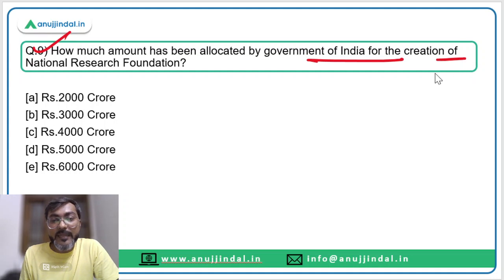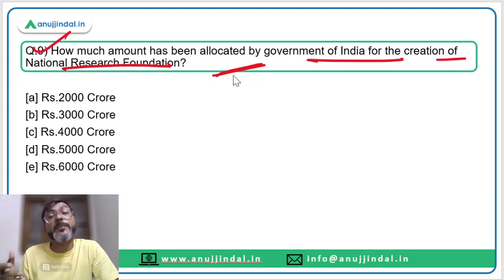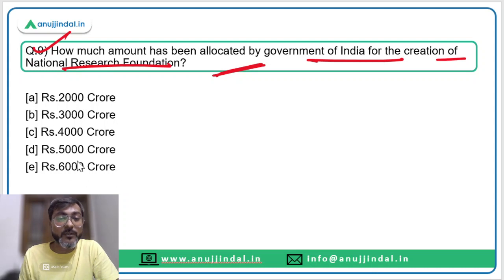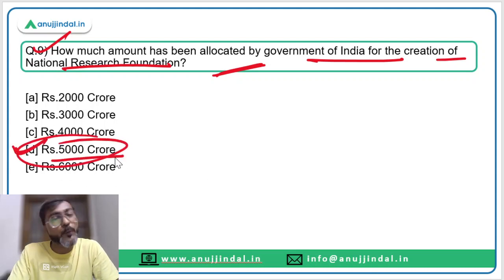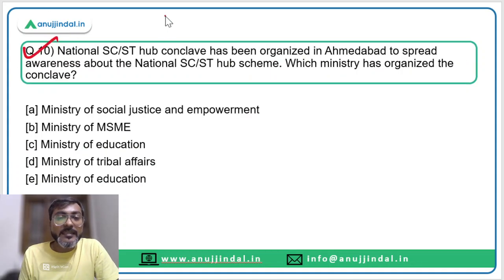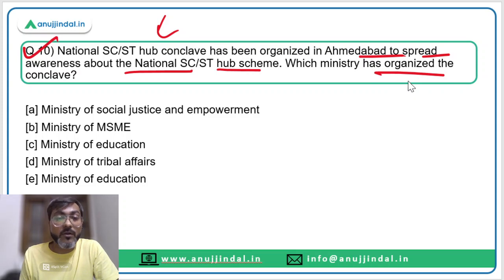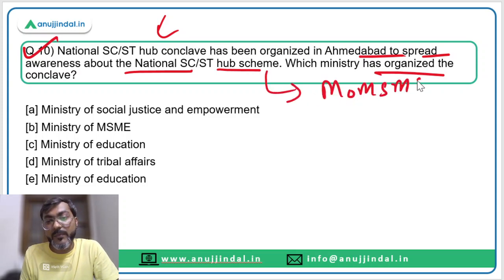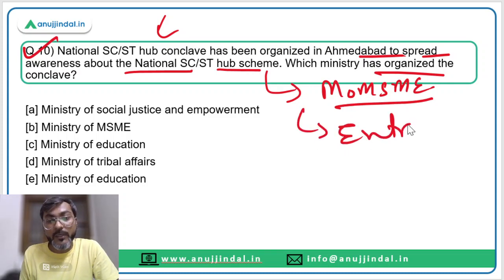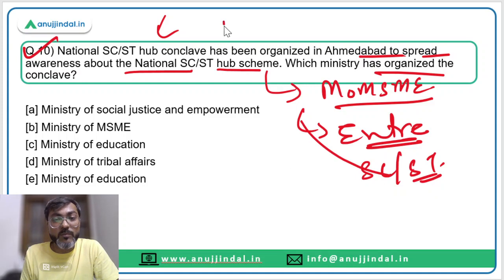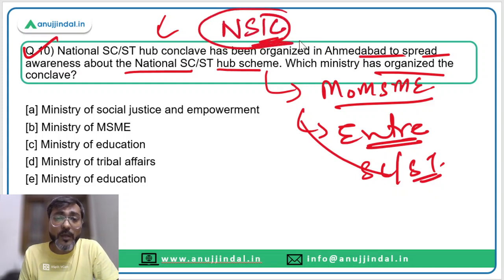Question nine: how much amount has been allocated by the Government of India for the creation of the National Research Foundation? Rupees 5,000 crore has been allocated — option D is the correct answer. Question ten: the National SC/ST Hub Conclave has been organized in Ahmedabad to spread awareness about the National SC/ST Hub scheme. This scheme is implemented by the Ministry of MSME, headed by Narayan Rane, to inculcate entrepreneurship capabilities among SC and ST youths. The nodal agency is NSIC — National Small Industries Corporation — which works under the Ministry of MSME. The correct answer is option B.